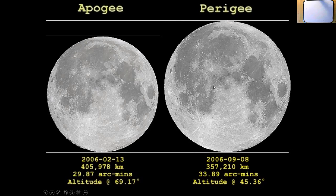It is called a supermoon - you may have heard of that. When it's close to perigee and close to a full moon, it's called a supermoon. So whenever you hear them talking about the supermoon, it means it's pretty close to full moon and very close to perigee. It's going to look something like 17% bigger in the sky - a little bigger.